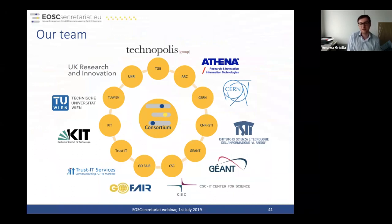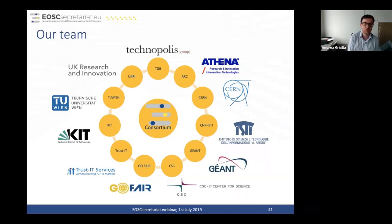The EOSC Secretariat is a Horizon 2020 project with a consortium of 11 partners. The coordinator is the Tecnopolis group and other partners come from the research world — universities, research infrastructures, foundations — all already in the EOSC community. The guiding principles are independency and neutrality from any vested interest, being the main channel for the stakeholder community to reach EOSC governance, working under the supervision of the executive board.